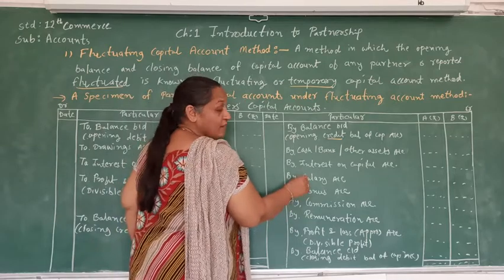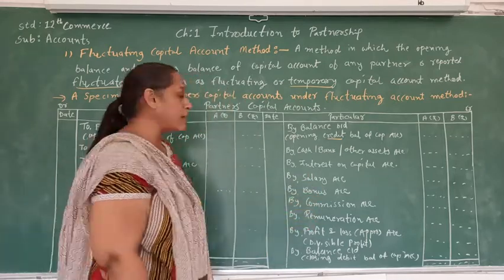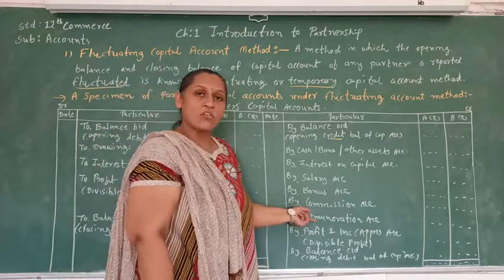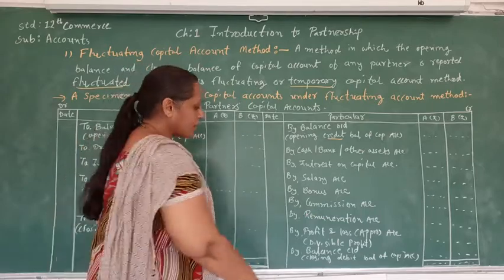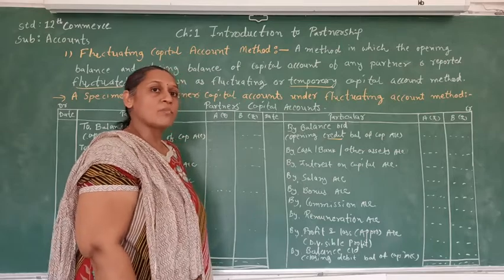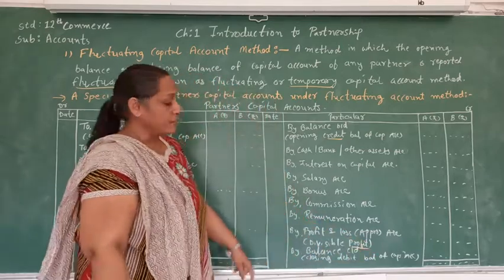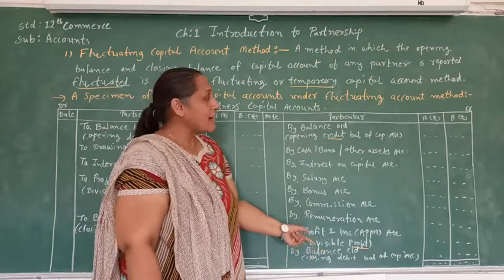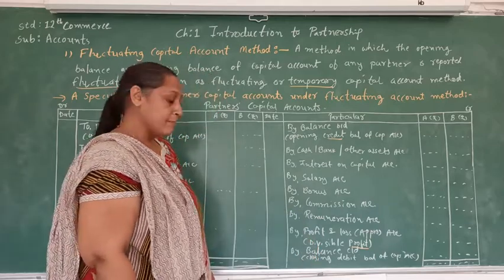After that, if any salary, bonus, commission, or remuneration is supposed to be paid to the partner, that is also written on the credit side of the partner's capital account. The last item on the credit side is the profit and loss appropriation account — if any divisible profit is there, it is divided between the partners and credited to the partner's capital account.